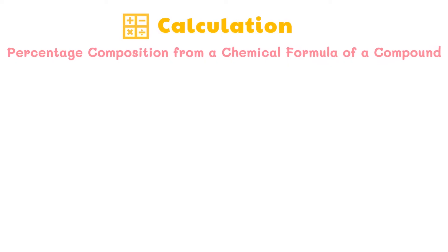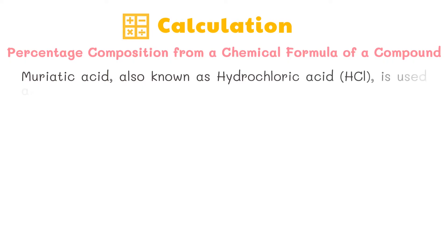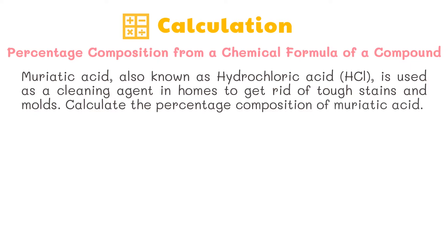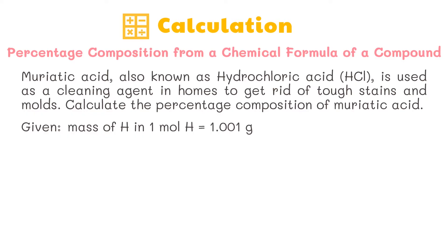Let's try this sample problem. Muriatic acid, also known as hydrochloric acid, is used as a cleaning agent in homes to get rid of tough stains and molds. Calculate the percentage composition of muriatic acid. Step one: list the known and unknown quantities. The known quantities are the mass of hydrogen in one mole, which is 1.001 grams, and the mass of chlorine in one mole, which is 35.45 grams. Note that these can be found as atomic masses from the periodic table of elements.